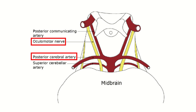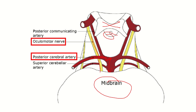Let's look at another picture. We can see the midbrain, optic radiation, and pituitary area. Here we can see the posterior cerebral artery arising from the basilar artery, and a nerve running very close to its origin. This structure is the oculomotor nerve — cranial nerve 3. So the oculomotor nerve is very closely related to the posterior cerebral artery, which is a very important point.